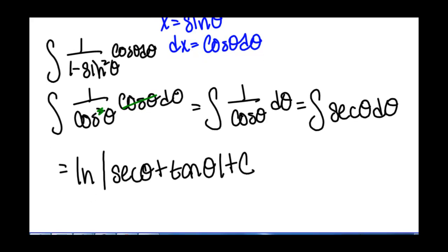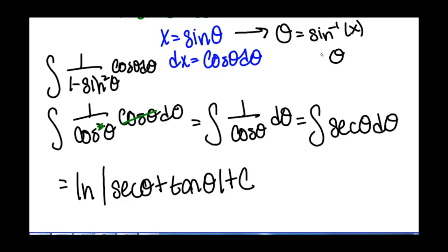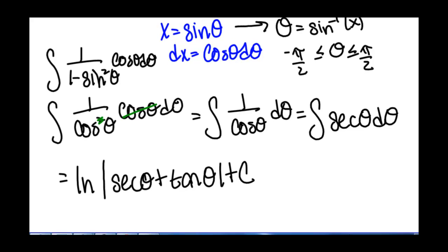Now we have our solution, however it's in terms of theta, and we want a solution in terms of x. So we go back to our substitution where we said that x equals sine of theta. This means that theta equals the inverse sine of x, and theta can only go between negative pi over 2 and pi over 2 according to our definition of the inverse sine of x. So now we need to use right triangles to figure out what secant of theta and tangent of theta are.